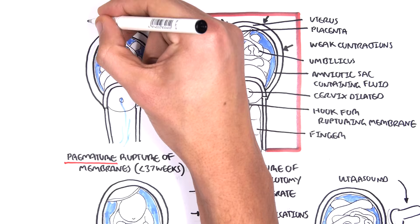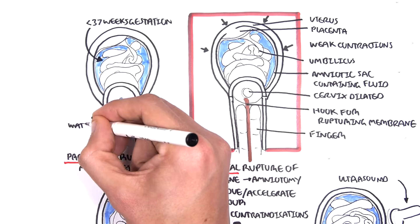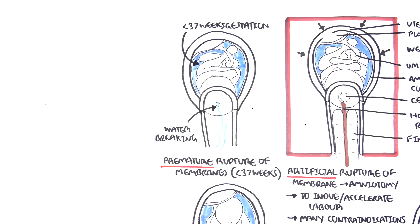So here the fetus is less than 37 weeks old. And the baby, the fetus might be very small but the water has broke. Now in this scenario, the baby might have to be delivered.